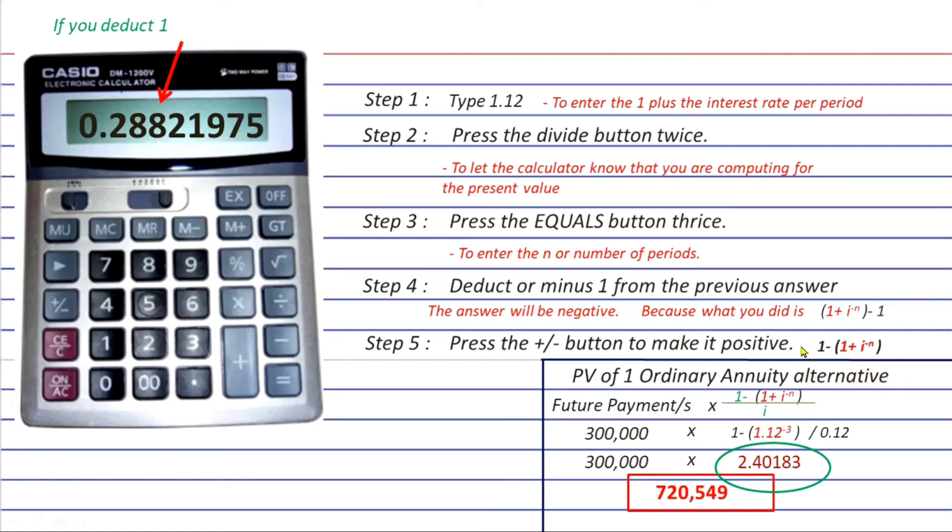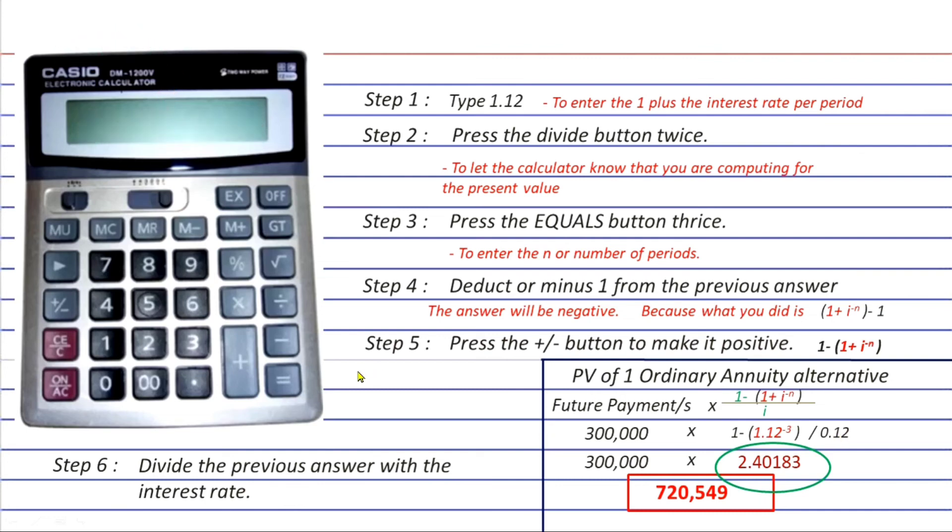Now the last step is just to divide this by the interest rate, which is 12 or 0.12 in this case, and you will already get the 2.401831268, which is the present value of one ordinary annuity factor that we are trying to get.